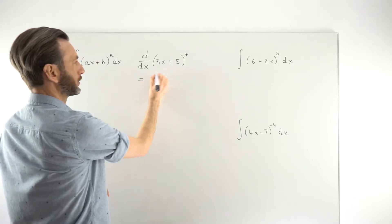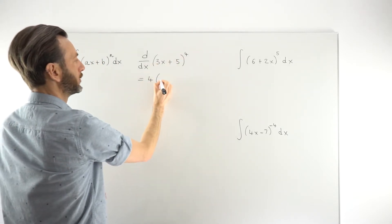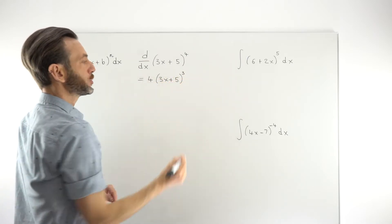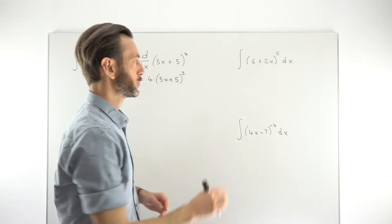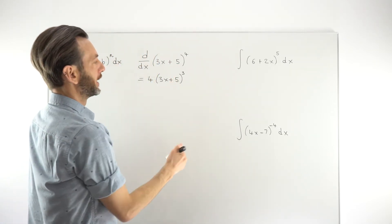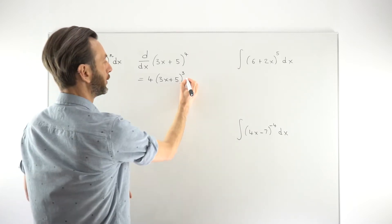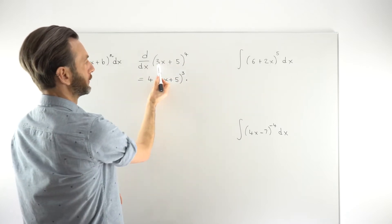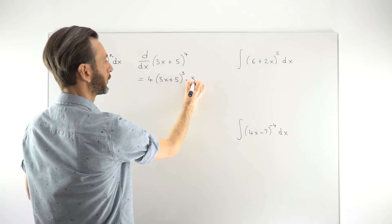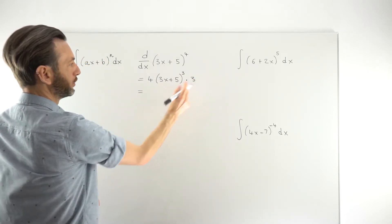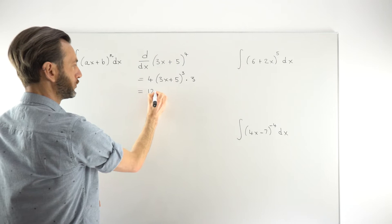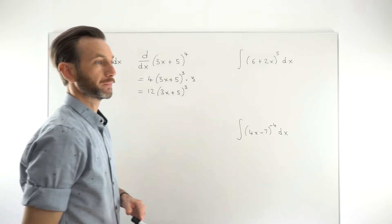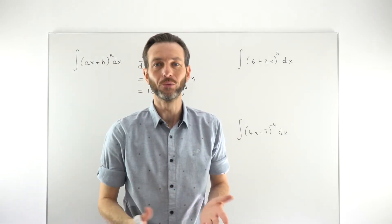The way this works for a derivative is using the power rule twice. You multiply by the power — so bring the four in front — leave the bracket alone, and reduce the power by one. That is doing the power rule for differentiation on the bracket. What makes it the chain rule is then multiplying by the derivative of the inside of the bracket, which is three. Simplifying by multiplying three and four together gives us 12(3x + 5) to the power of 3.